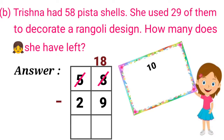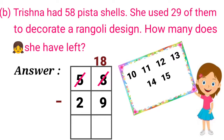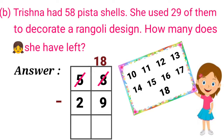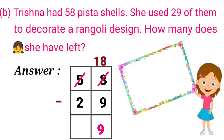Counting: 9 after 10, 11, 12, 13, 14, 15, 16, 17, 18 — so the answer is 9. Then move to the 10's place. Since we took 1 from 5, it will become 4. So 4 minus 2: counting 2 after 3, 4 — so the answer is 2. We get the answer 29.